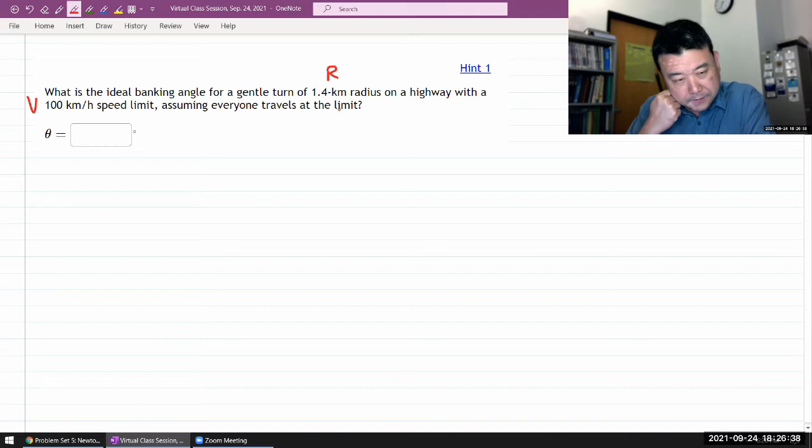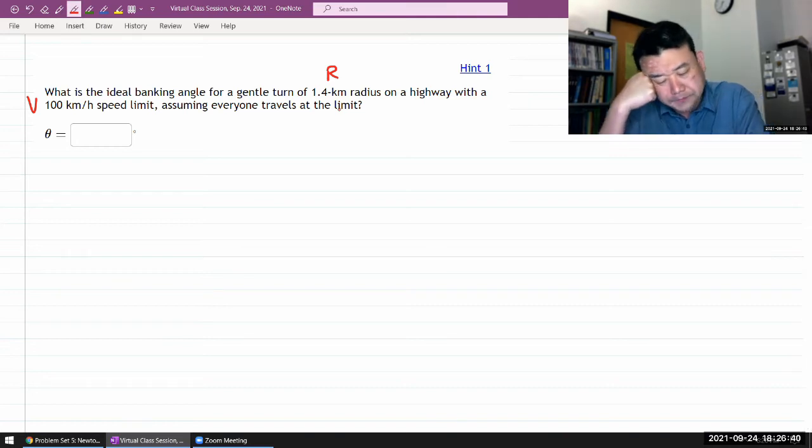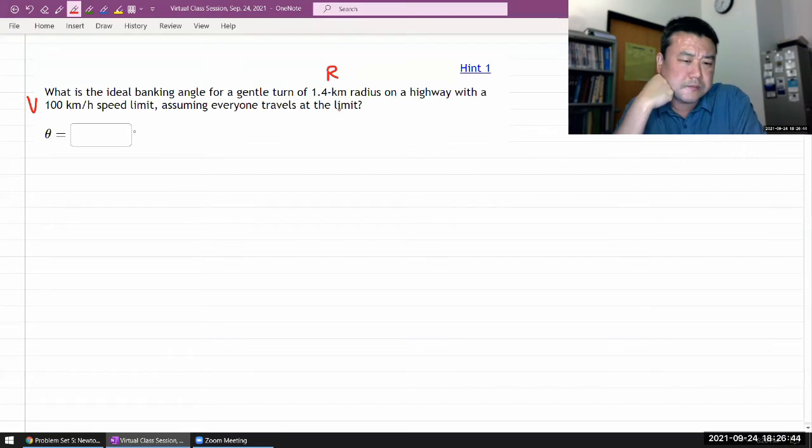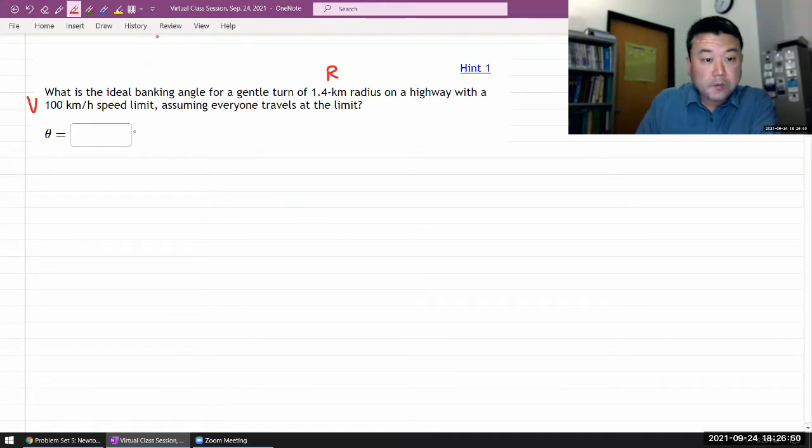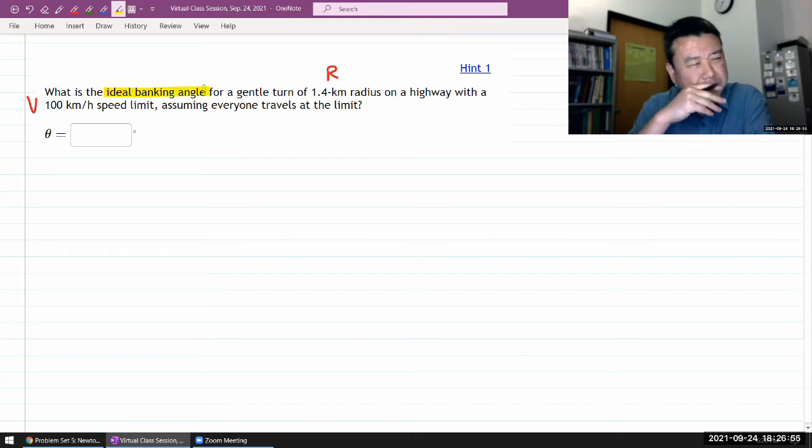Okay, so there are some assumptions, some things that they presume that we are on the same page about. For example, when they call something ideal banking angle, what do they mean?